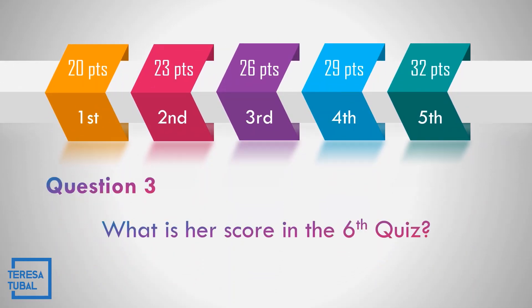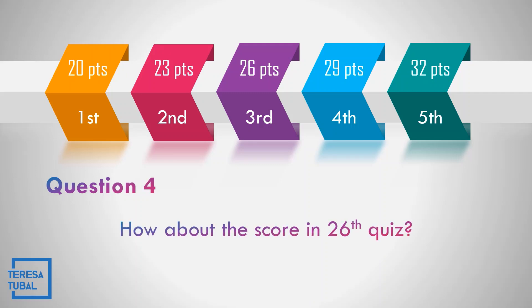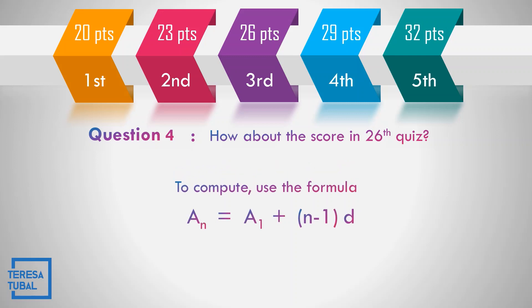What is the score of Joy in the sixth quiz? The answer is 35 points. How about the 26th quiz? We can use listing all the next points of Joy, but it takes too long to do so. We need to use the formula for the arithmetic sequence. The formula is: a sub n = a sub 1 + (n − 1) × d.